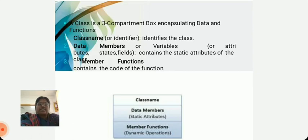Class name identifies the class. It is an identifier. Data members are variables. They contain the static attributes of the class. Member functions contain the code of the functions.